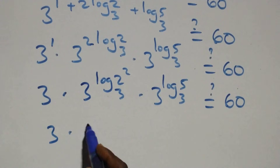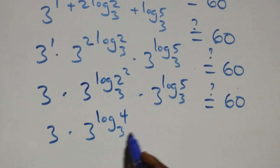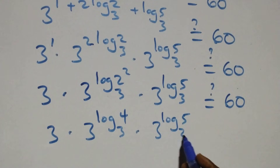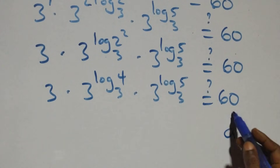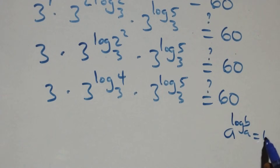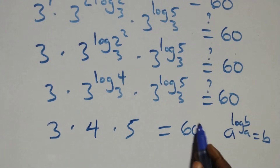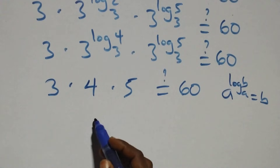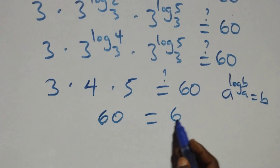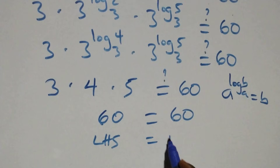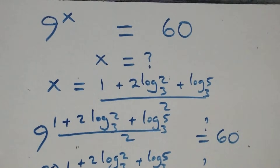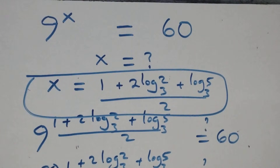This is the same as 3 times 3^(log₃4) times 3^(log₃5). That gives 3 times 4 times 5: 3 times 4 is 12, and 12 times 5 is 60, which equals 60. Left hand side equals right hand side. Therefore we conclude that x equals (1 + 2 log₃2 + log₃5) all over 2 satisfies this given problem.